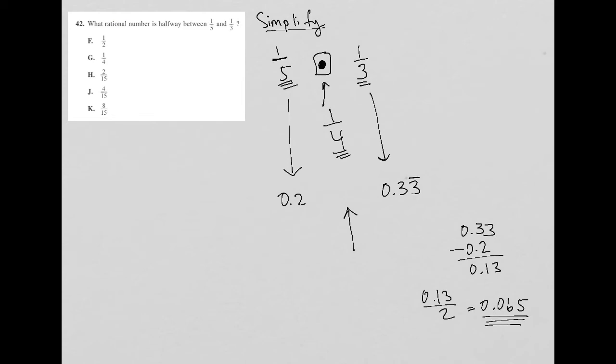So when I take that quantity and add it to the 0.2, or if I were to subtract it away from the 0.33, that should get me to my middle value. So I'm going to just add that to 0.2.